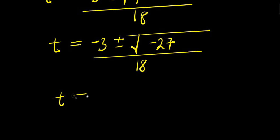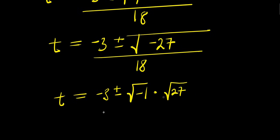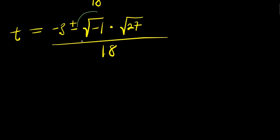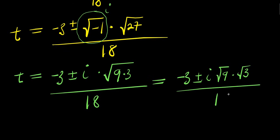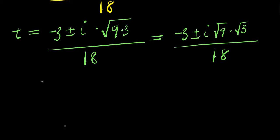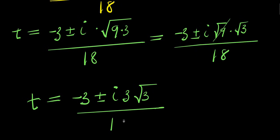So from here, remember the square root of negative 1 is i. t equals negative 3 plus or minus i times square root of 27. Now 27 equals 9 times 3, so square root of 27 equals square root of 9 times square root of 3. Divided by 18. So we have t equals negative 3 plus or minus i times 3 times square root of 3, divided by 18.